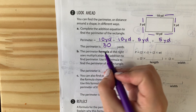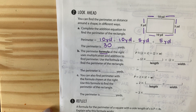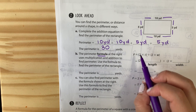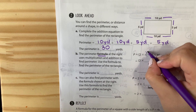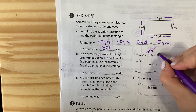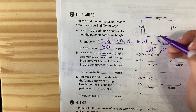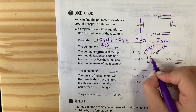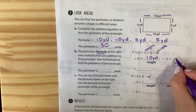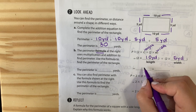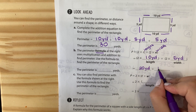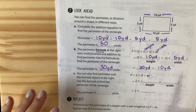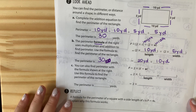For letter B, we use multiplication and addition to find perimeter. The formula is: P = 2 × L + 2 × W. It's like taking 10 + 10 and saying that's 10 × 2, or 5 + 5 and saying that's 5 × 2. So the length is 10, meaning 2 × 10, and the width is 5, meaning 2 × 5 yards. Two times 10 is 20, and 2 times 5 is 10. So the perimeter is 30 yards. Use whichever makes the most sense to you.